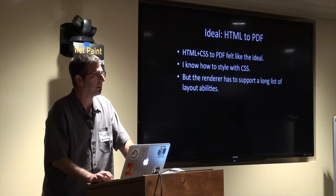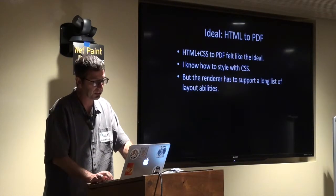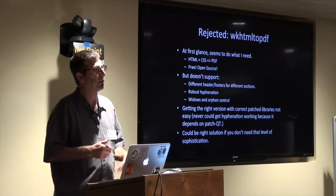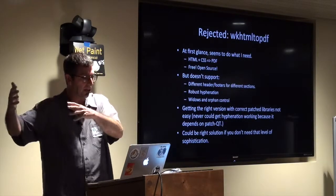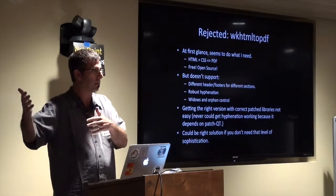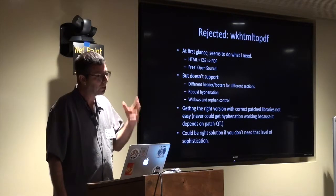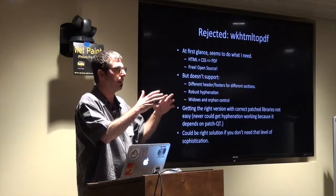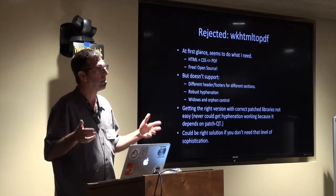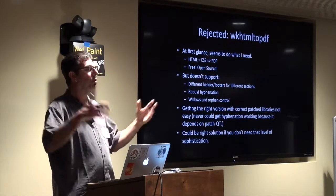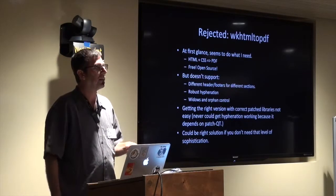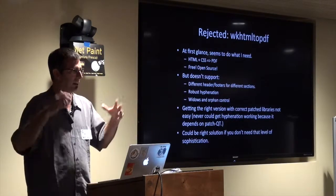HTML to PDF felt like the ideal, because it uses a set of skills I do all day long in my day job — I know how to style stuff with CSS. But the renderer has to support a long list of capabilities. The first thing I considered was WK HTML to PDF. It's free, it's HTML plus CSS to PDF, perfect. But it turns out not to support everything I needed: it doesn't support putting different headers and footers in different sections, it doesn't support robust hyphenation, and it doesn't have widow and orphan control. And if you go look on Stack Overflow, all the questions are about how to get it installed with the right patched version of WebKit.